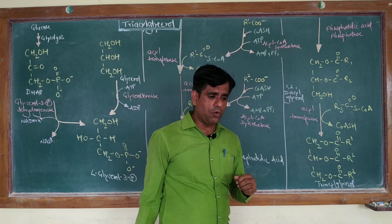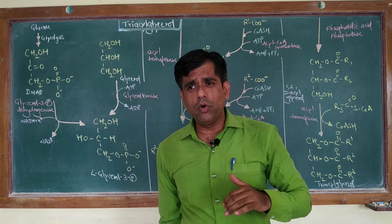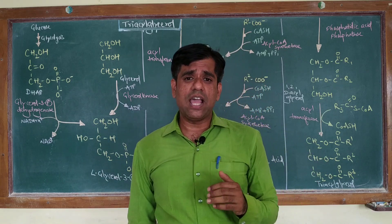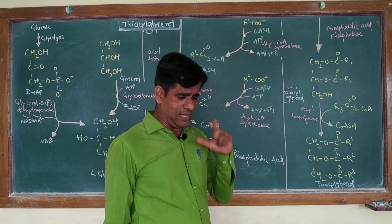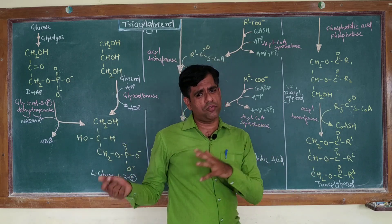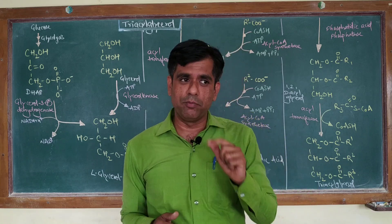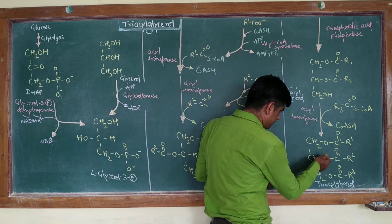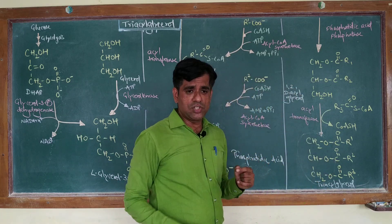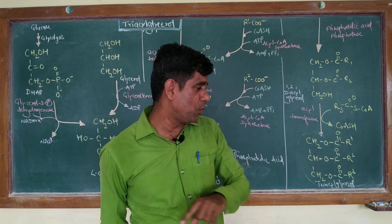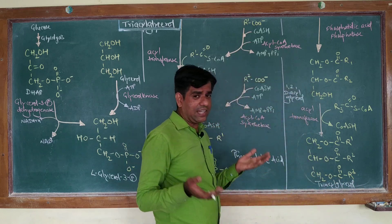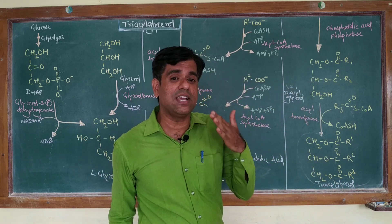How are these synthesized? Talking about triacylglycerol or phospholipids, you will find that the synthetic pathways for both have many intermediates in common. What you basically require for synthesizing a triacylglycerol or phospholipids is, number one, glycerol-3-phosphate as a backbone — we know that triacylglycerol has a glycerol backbone. And second, what you are going to require are your fatty acids, the activated fatty acids in the form of fatty acyl-CoA.